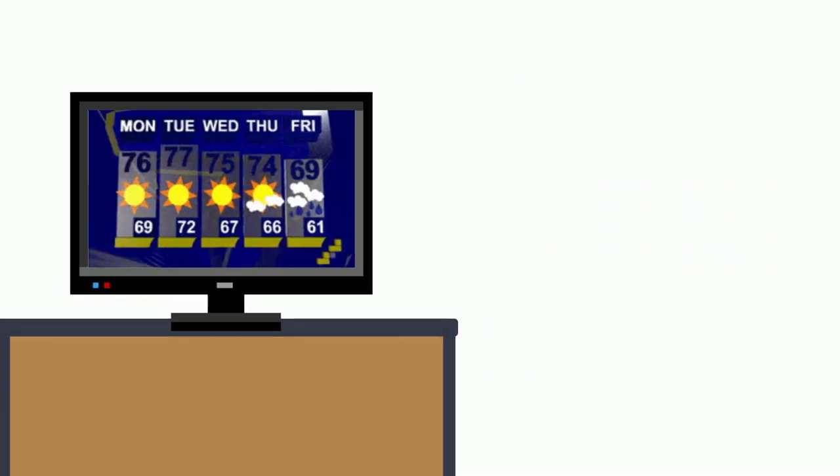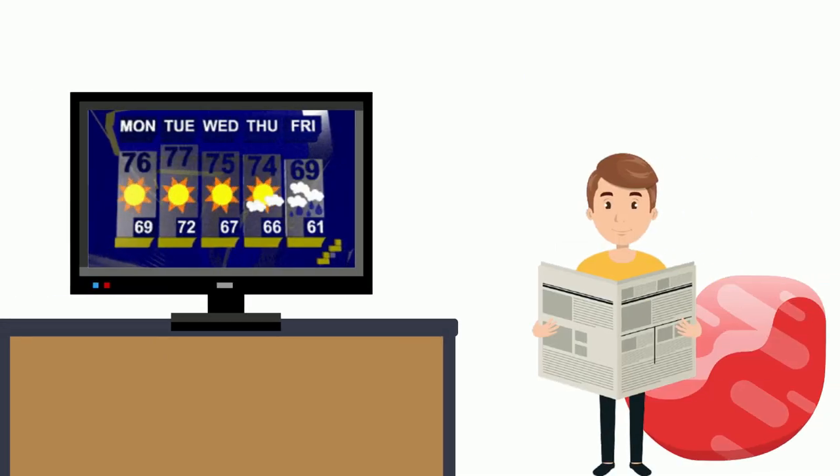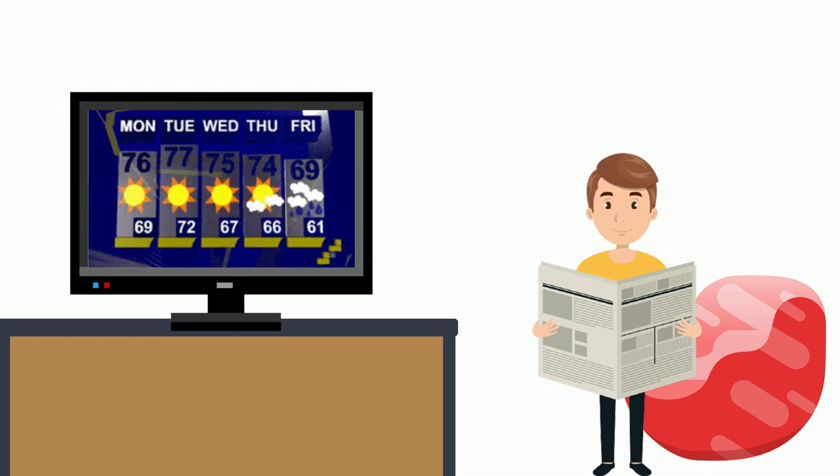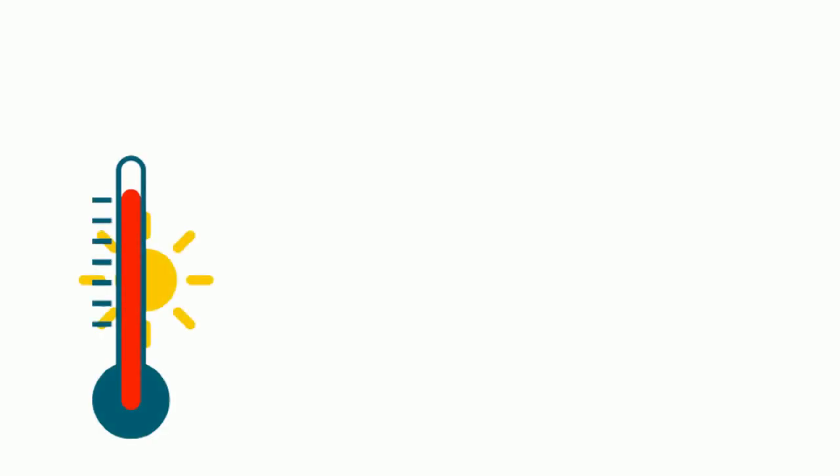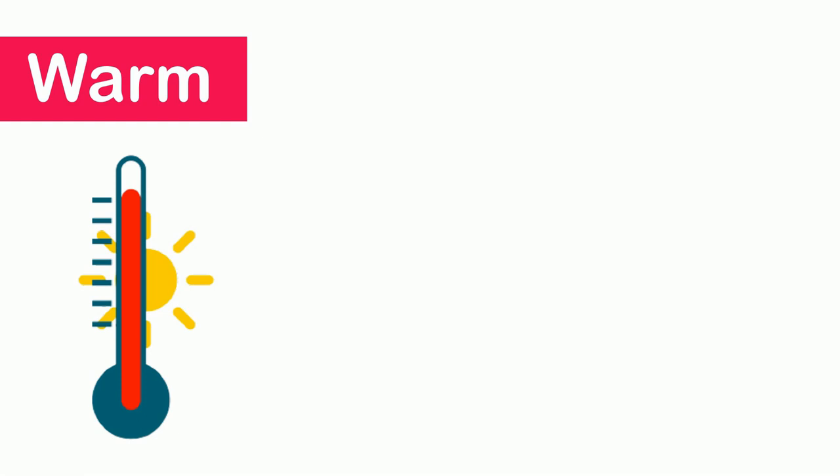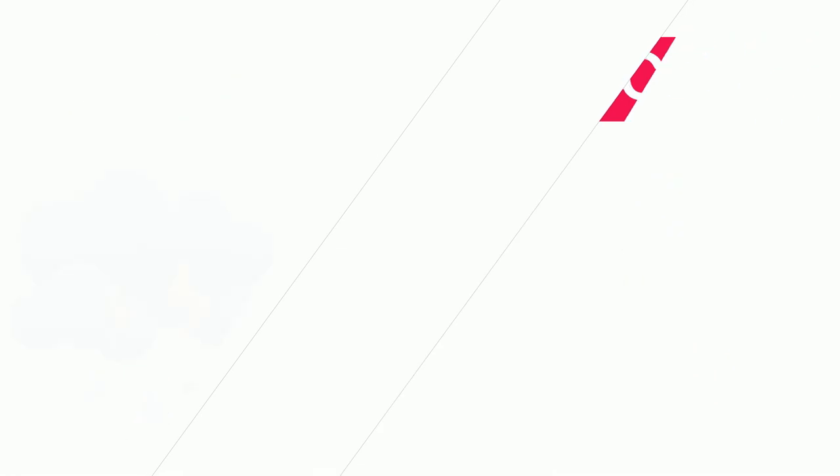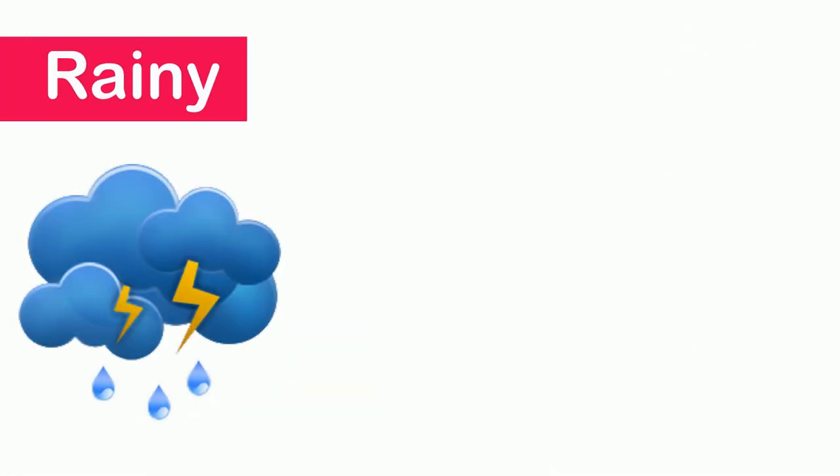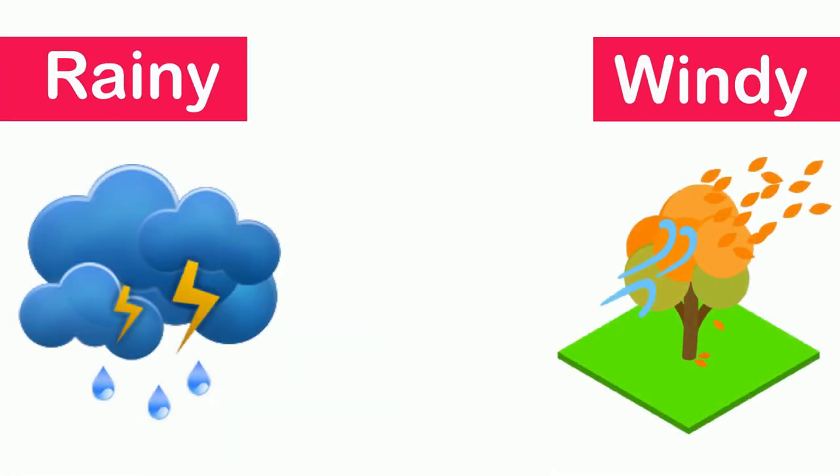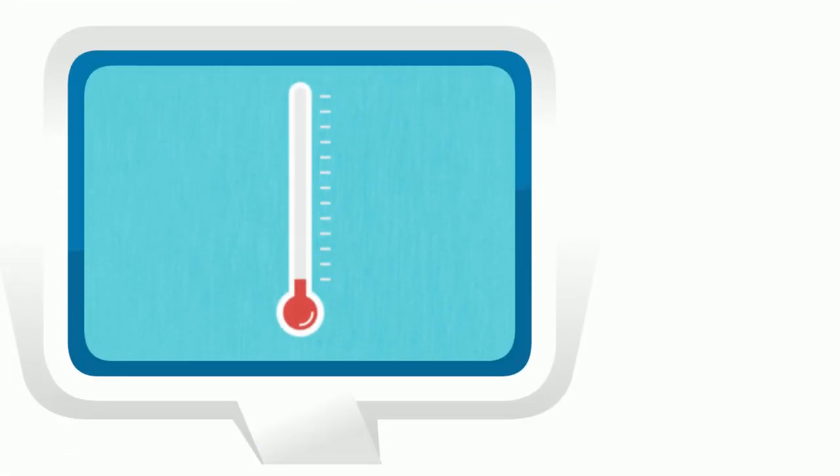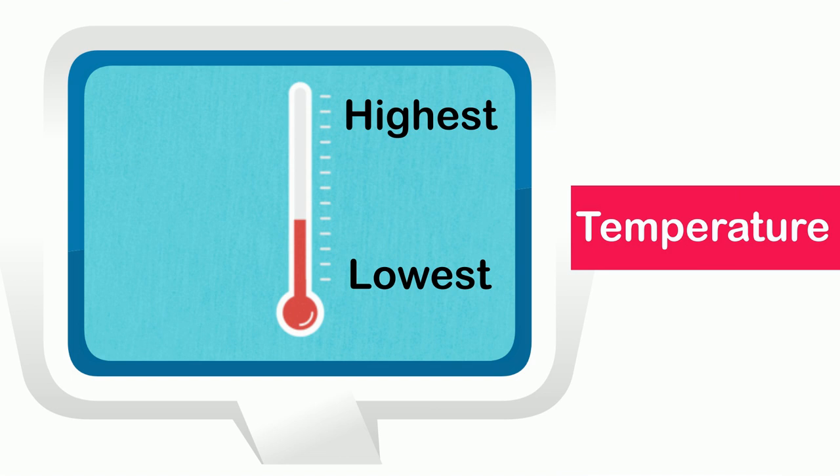In the news about weather on television and in the newspaper, we are informed what kind of weather we are going to have like if it is going to be warm or cold, if it is going to be rainy or windy. They also predict the highest and lowest temperature of the day for each day.